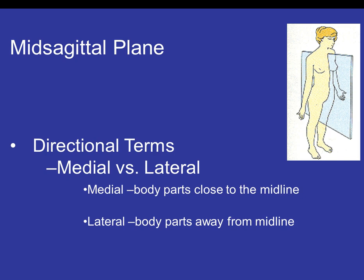Next is the mid-sagittal plane, which divides you into right and left. The directional terms associated with this plane are medial and lateral. Medial refers to body parts close to the midline — the mid-sagittal plane creates an imaginary midline splitting from the top of the head, through the middle of the nose, down the chest bone, and between the legs. Lateral refers to body parts away from the midline, towards the side.